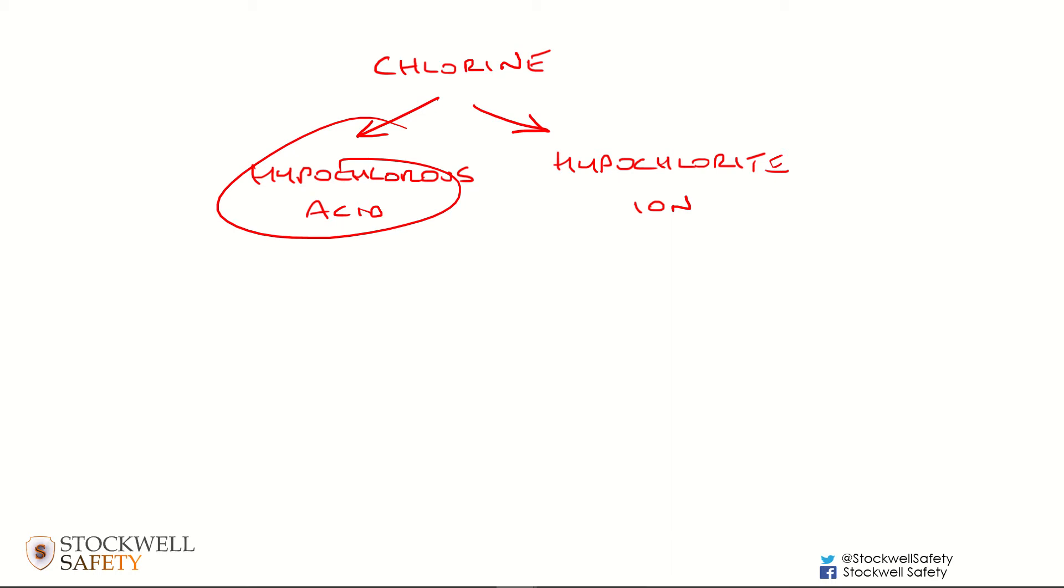The chlorine is the precursor to hypochlorous acid. You can't get hypochlorous acid separately from its precursor of chlorine. What you want is the chlorine dissociating into hypochlorous acid rather than the hypochlorite ion, and the ratio between them is completely dependent on the pH.